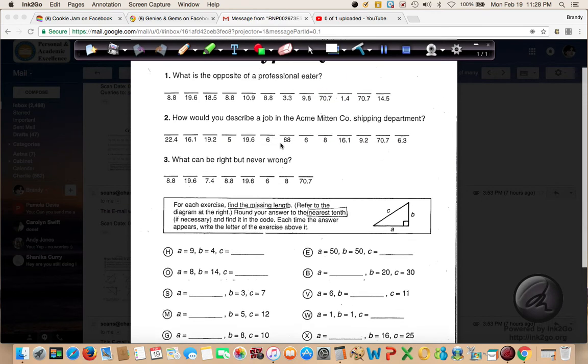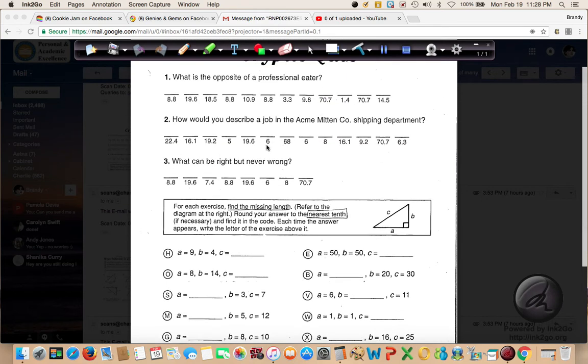So that means that if the six appears lots of different times, you're going to write that letter in that spot every time it happens. It doesn't matter the question. It's not separated by one, two, or three. It's whenever that number appears, you write that letter.